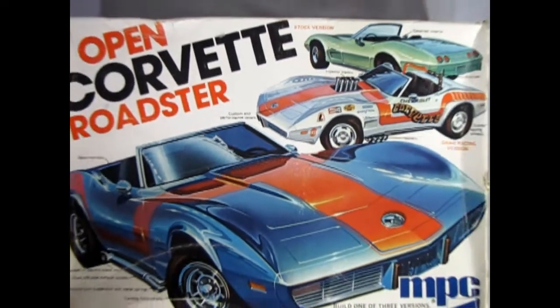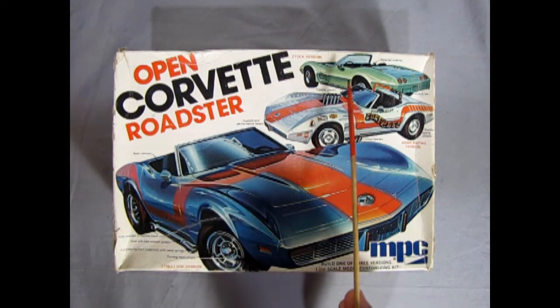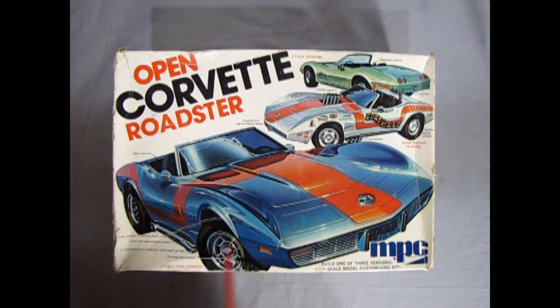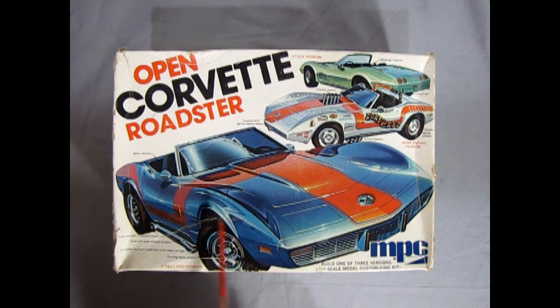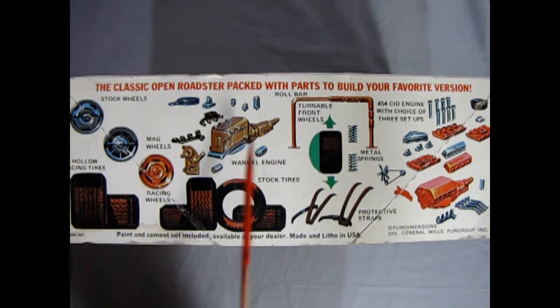Now we roll the clock all the way back to 1975 as we take a look at our Open Corvette Roadster model kit by MPC. This model kit you can build one of three ways as the stock version, the drag racing version, or the street rod version.